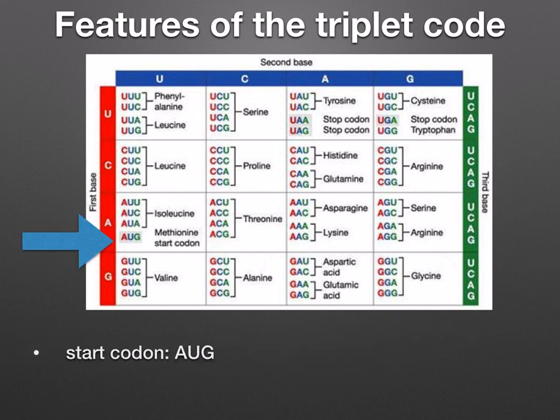The start of a sequence is always AUG. This codes for the amino acid methionine. If this first methionine molecule does not form part of the final polypeptide, it's going to be removed later.